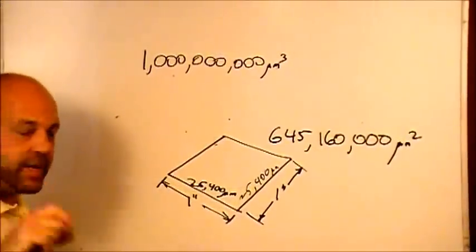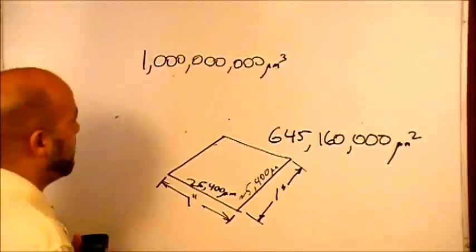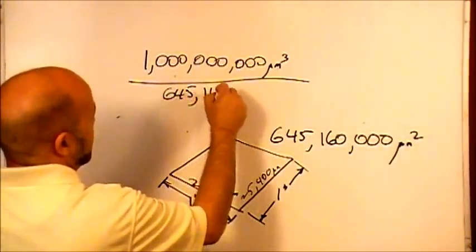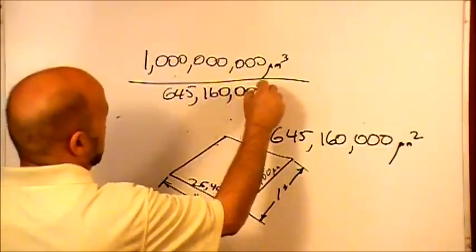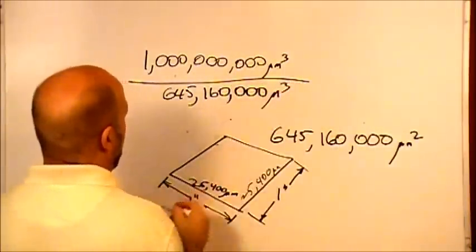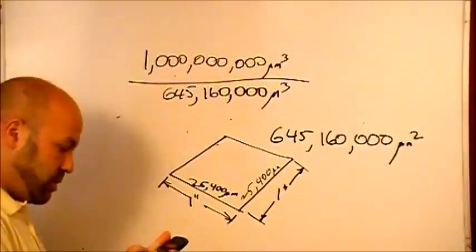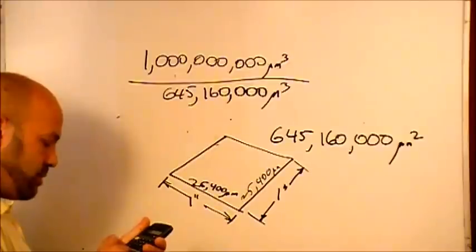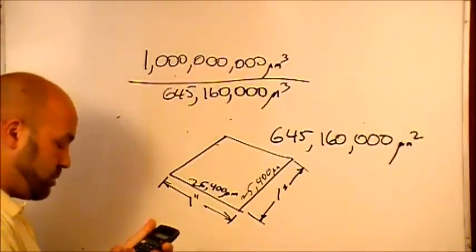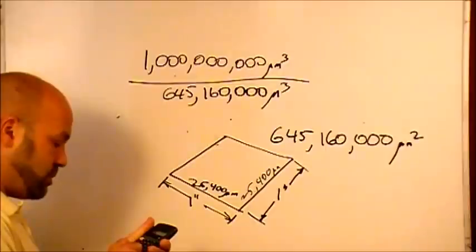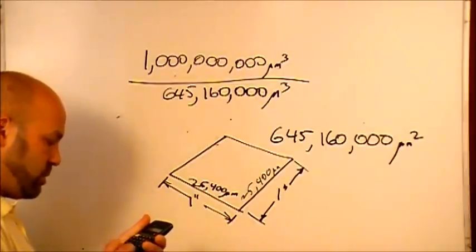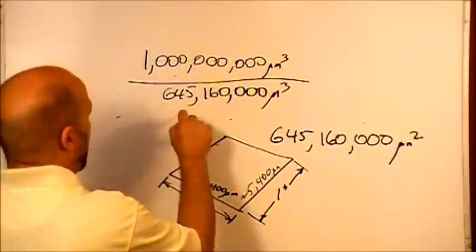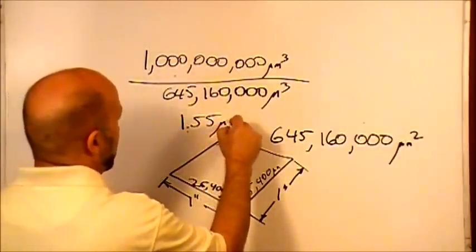So we take that 1 billion, we divide by 645 million, 160,000 microns cubed, and what we get is 1.553. So we get 1.55 microns.